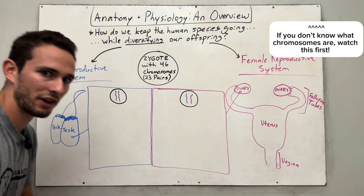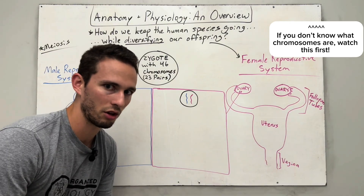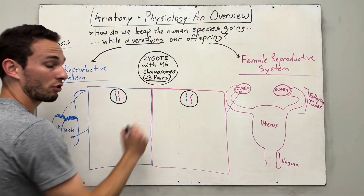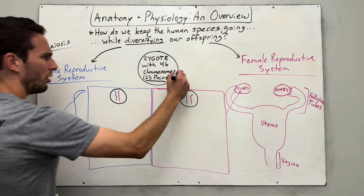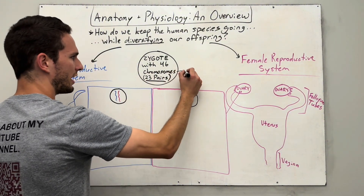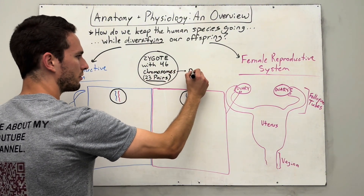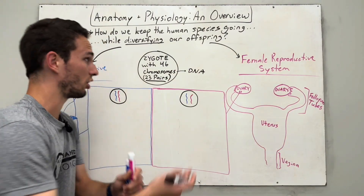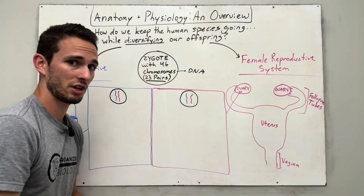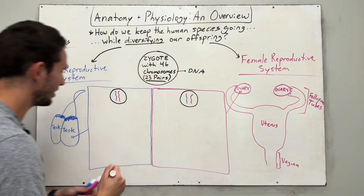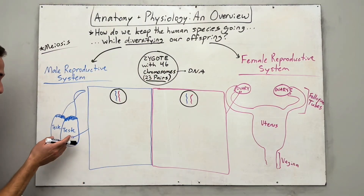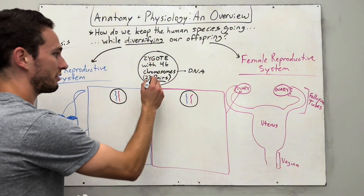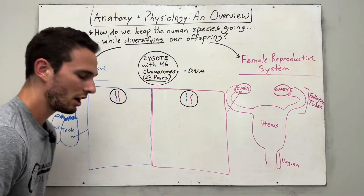A normal functioning human cell will have 23 pairs of chromosomes. Chromosomes are just DNA organized into these little chapter books called chromosomes. In each person, male and female, all of our cells have 23 pairs of them.